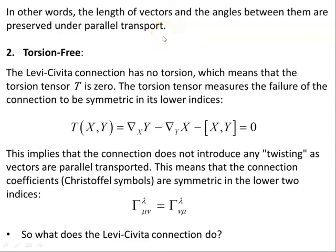Think about it: if you have vectors at two different points on the manifold and you want to compare the change, you take the final vector and parallel transport it back. You want to keep it parallel to itself and the same length, so that when you bring it back to compare with the first vector, you can see what the actual change is. You don't want the vector altered as it's transported back.